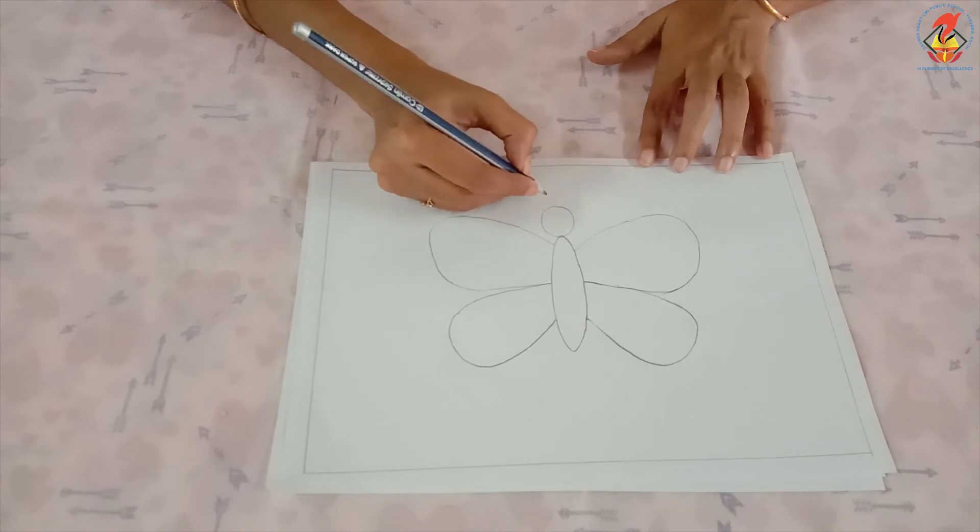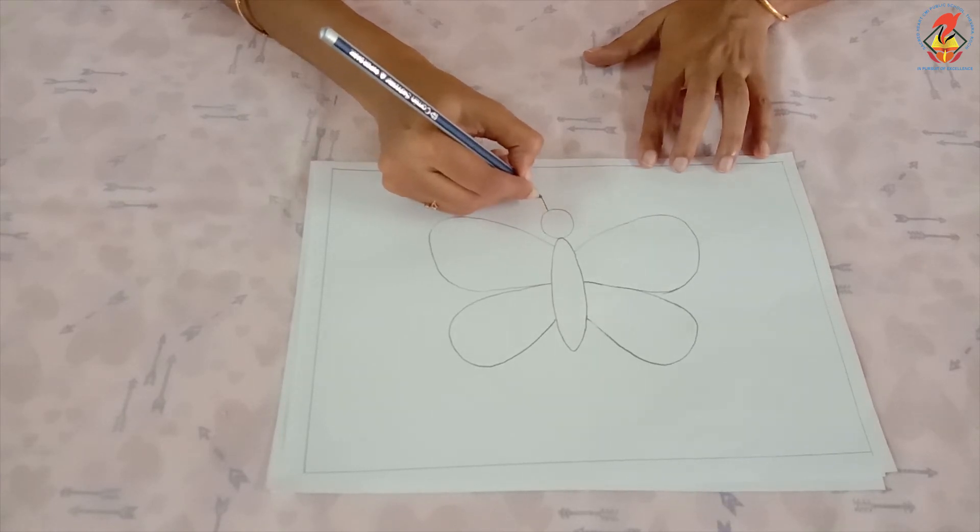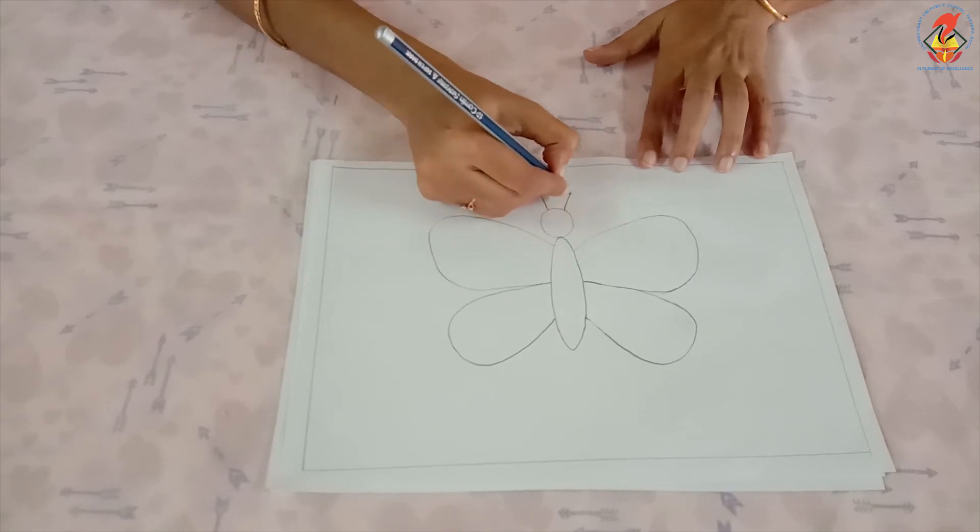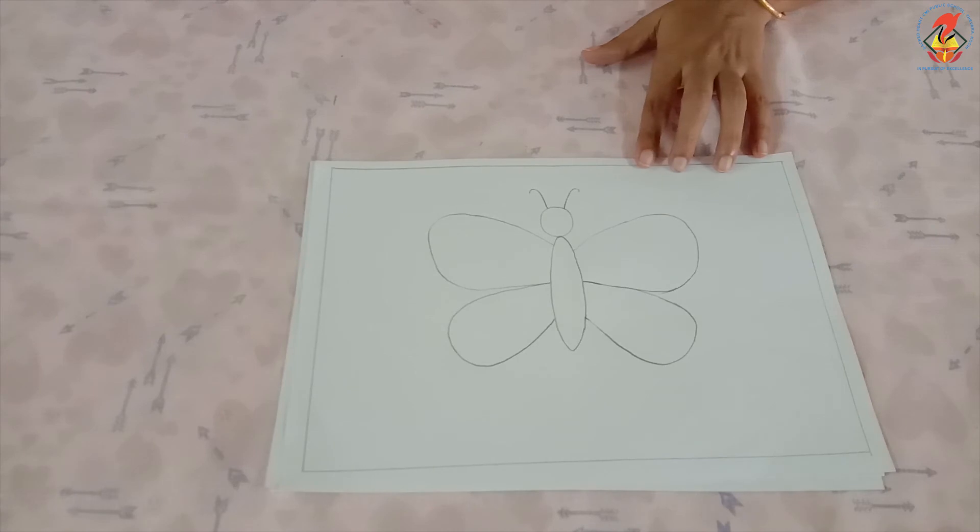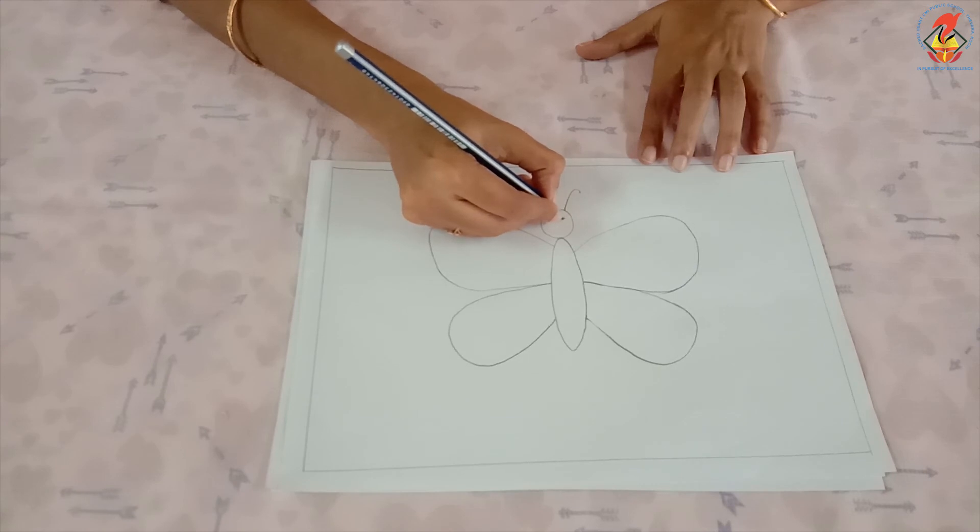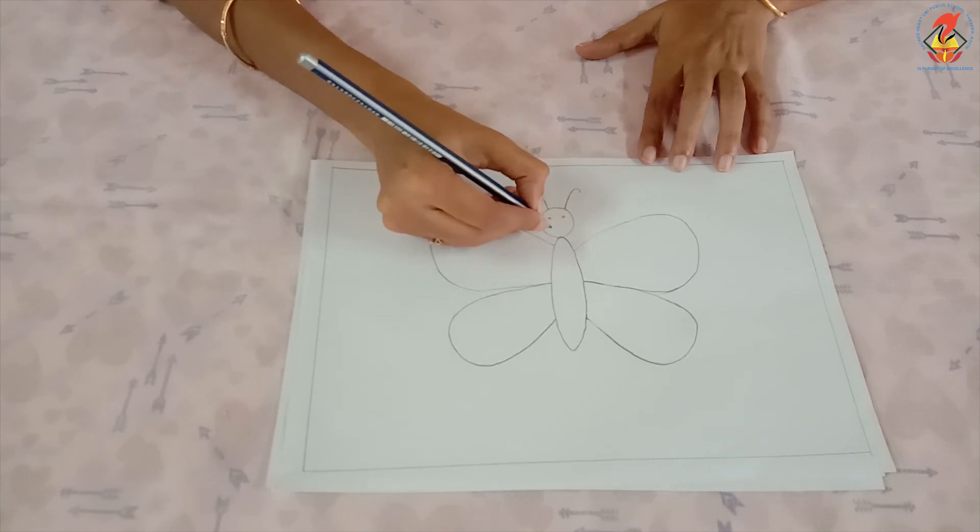Draw two antennas like this, going out in different directions. Draw a smiley face on the circle-shaped head with two small circles for the eyes and an upward curve for the smile.